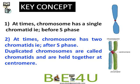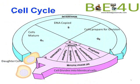This is the key concept: at times a chromosome has a single chromatid — that is, before the S phase. At other times we draw a chromosome with two chromatids, which is normally after the S phase. These duplicated chromosomes are called chromatids and they are held together at the centromere. Now let us look into the cell cycle.